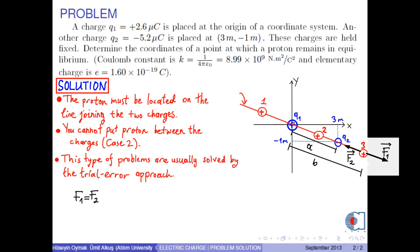F1 is given by the formula K times |Q1| times |e| over B², where B is the distance between Q1 and the proton. And the magnitude of F2 is K times |Q2| times |e| over (B − A)², where (B − A) is the distance between the proton and Q2.